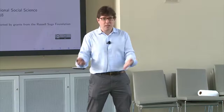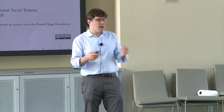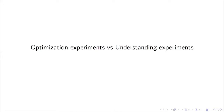I'm going to review some of the ideas that social scientists have developed over time to design interesting experiments and talk about how these make more or less sense in the digital age. I want to make a distinction between what I see happening on digital platforms at tech companies, which I'd call optimizing experiments, and what social scientists normally do, which are understanding experiments.